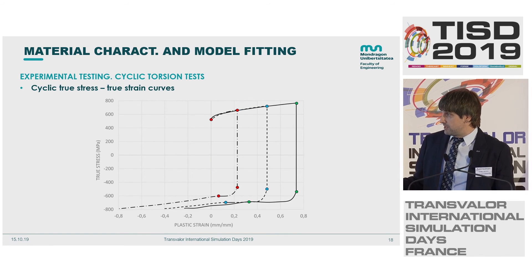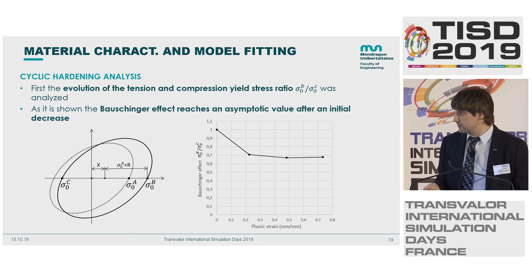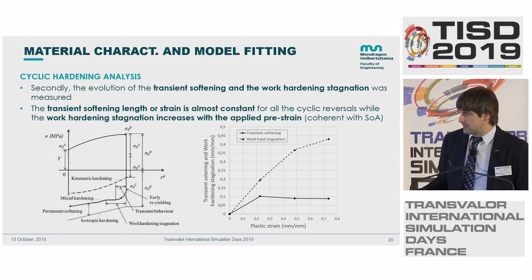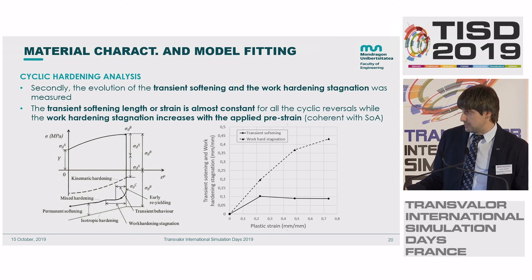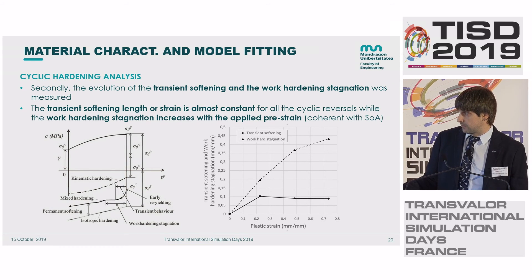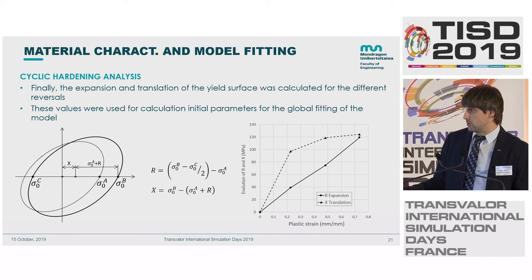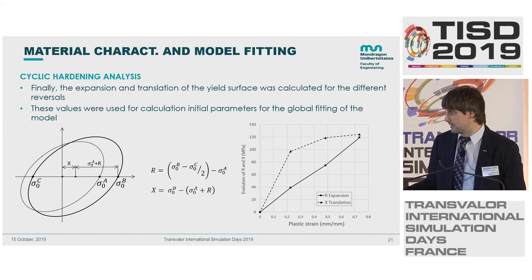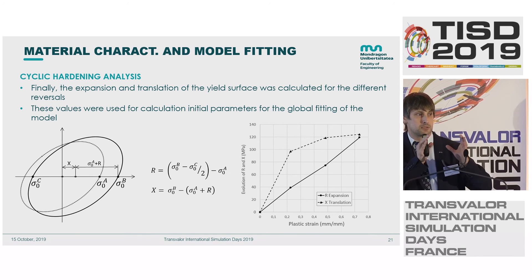Analyzing the Bauschinger effect as the ratio between the forward and reverse yield points, it becomes more or less constant regardless of pre-strain. The transient length is roughly constant but we have more work hardening plateau at larger pre-strains. Applying the mathematics, we extract R (isotropic hardening) and X (backstress): isotropic hardening increases roughly linearly while the backstress translates and then slows down.